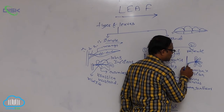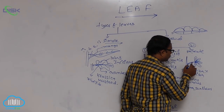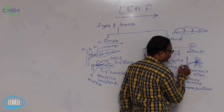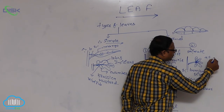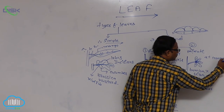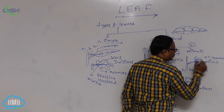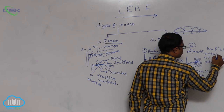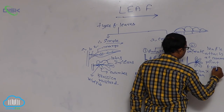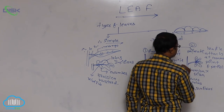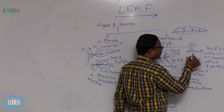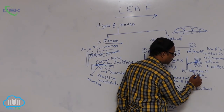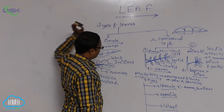In palmately compound leaves, the rachis is absent. The leaflets are attached at the end of the petiole at a common point. Because the leaflets spread out from a common point, it appears just like a palm — that is why it is called a palmately compound leaf. An example is Bombax, commonly known as silk cotton, with the scientific name Ceiba. This completes the topic of types of leaves.